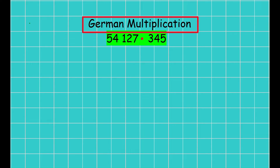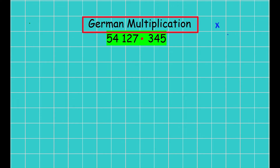Hi everyone, my name is Mr. Roy and I teach mathematics and physics in a German school. Today's topic is German multiplication. One thing to understand is that in German, the multiplication sign is a point, whereas in English we write a times sign. In English we call it 'times' and in German we call it 'mal', and we write it with a point.